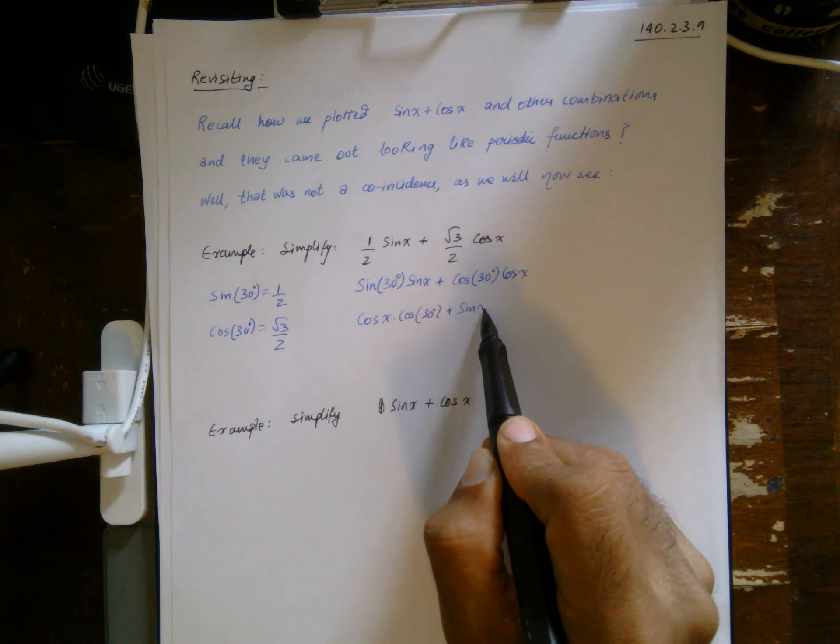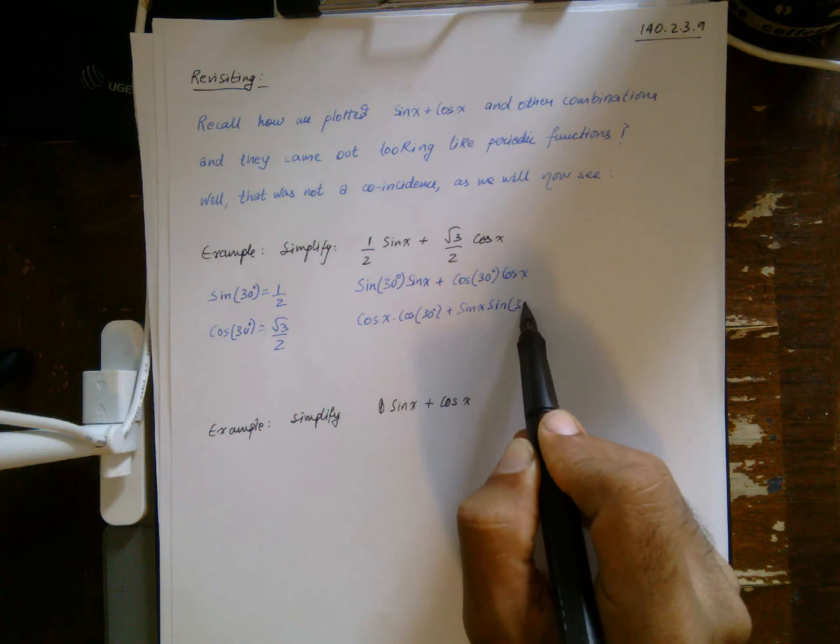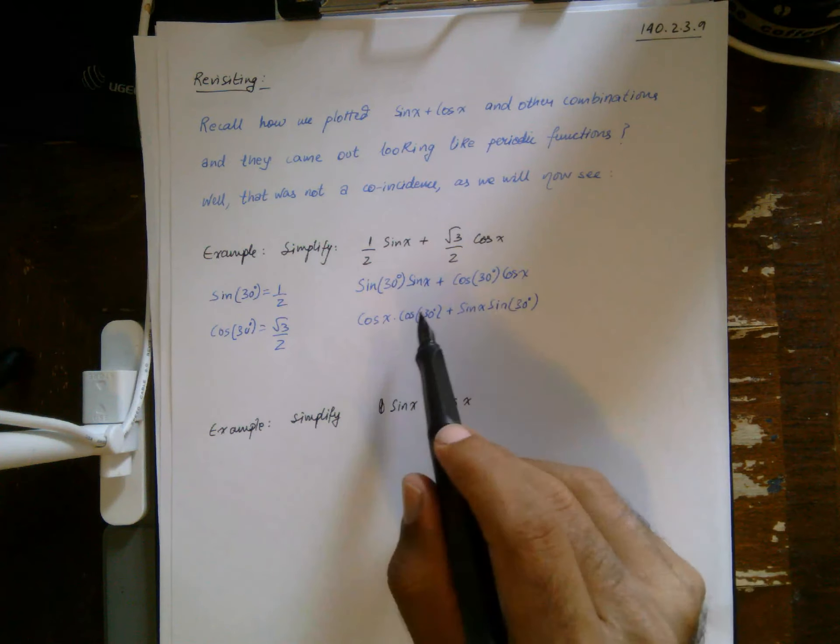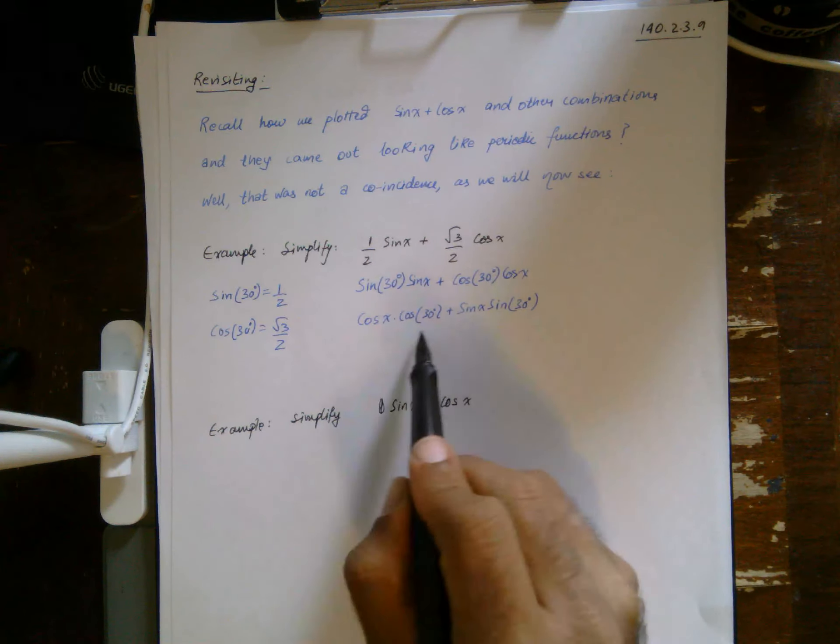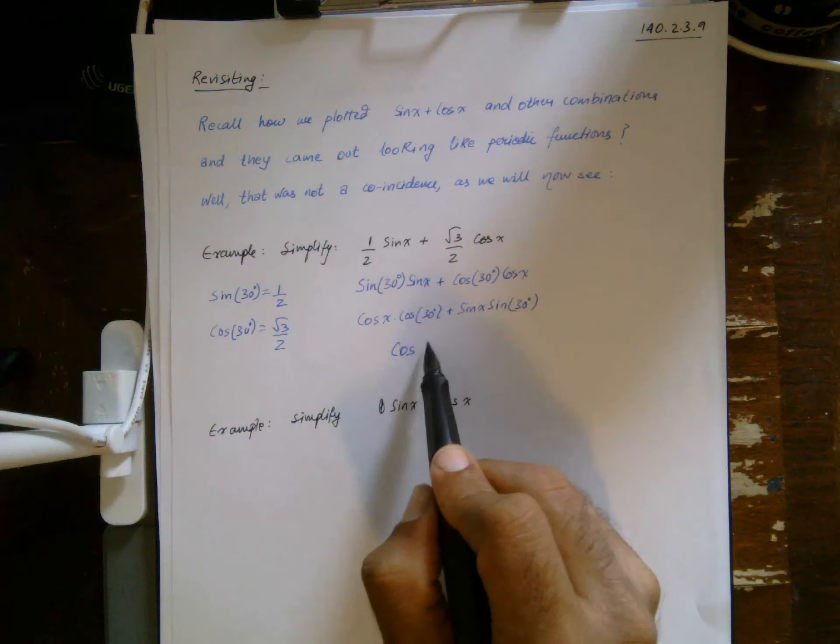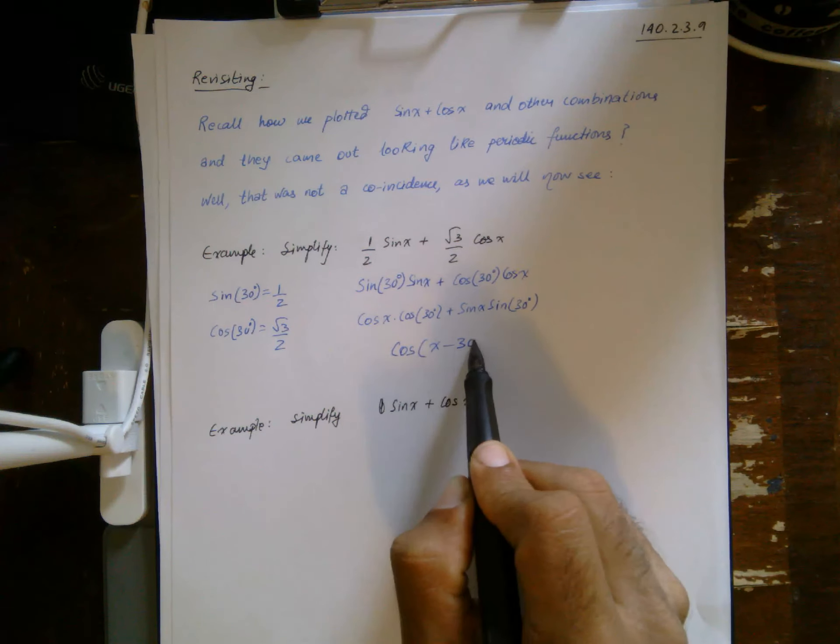And then just rewriting it as cosine x cosine 30 plus sine x sine 30. Effectively I'm not doing anything in these steps other than writing the cosine first, because then it looks similar to an identity.